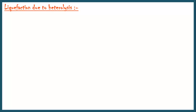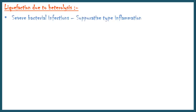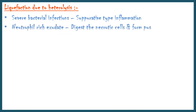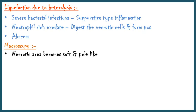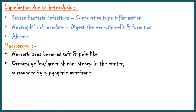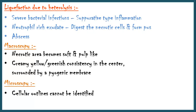Liquefaction due to heterolysis occurs in severe bacterial infections evoking a suppurative-type acute inflammatory reaction. The neutrophil-rich exudate digests the necrotic cells to form a thick fluid material in the form of pus — an abscess is the typical example. Macroscopically, the necrotic area becomes soft and pulp-like. In the case of pus, it has a creamy, yellow-greenish consistency in the center, surrounded by a pyogenic membrane. Microscopically, cellular outlines of dead cells cannot be identified, and in pus there are numerous neutrophils.